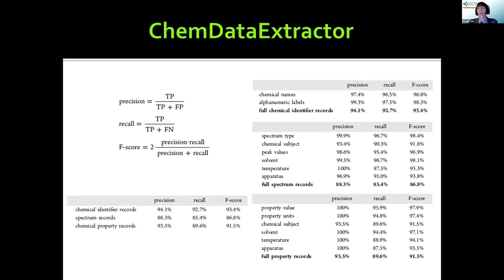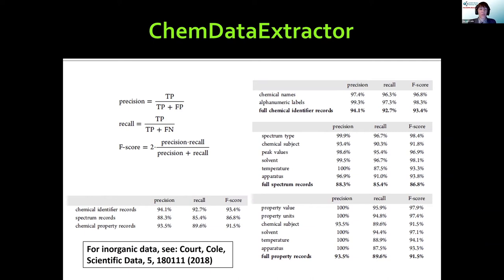Those precision and recall metrics were evaluated on an organic chemistry dataset, because the first applications of ChemDataExtractor were on organic materials. When we started working on inorganic materials, those precision and recall values initially fell through the floor — an example of how the chemistry domain and the language people use is very different. We had to specifically improve ChemDataExtractor for inorganic materials because the way people write about inorganic chemistry is different. If you're working on inorganic chemistry, there's a later paper that addresses those improvements.